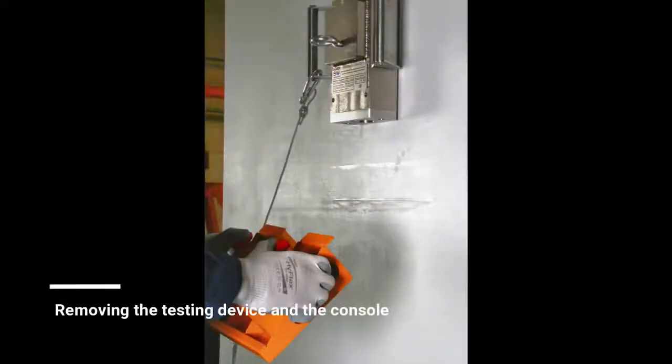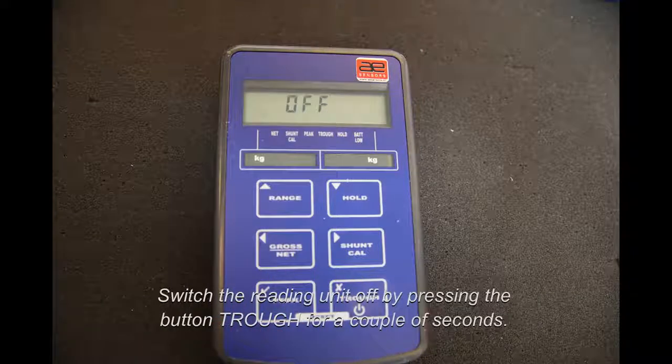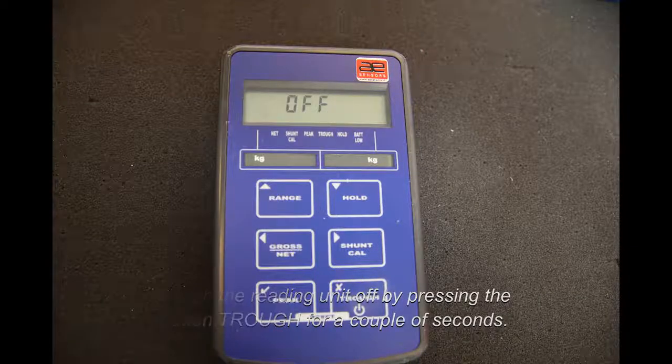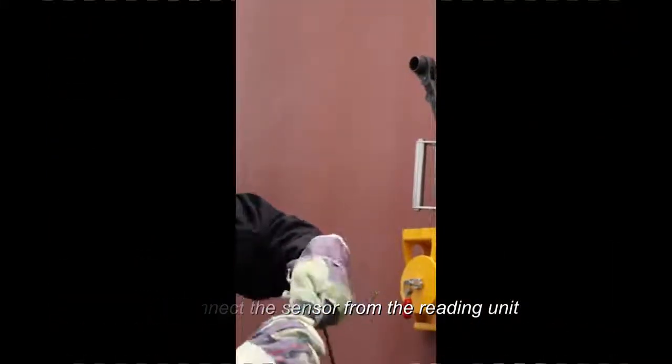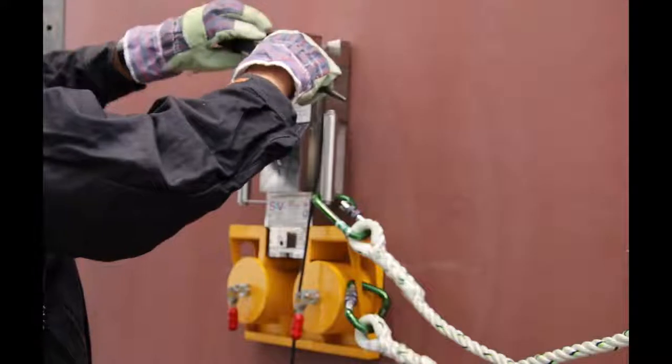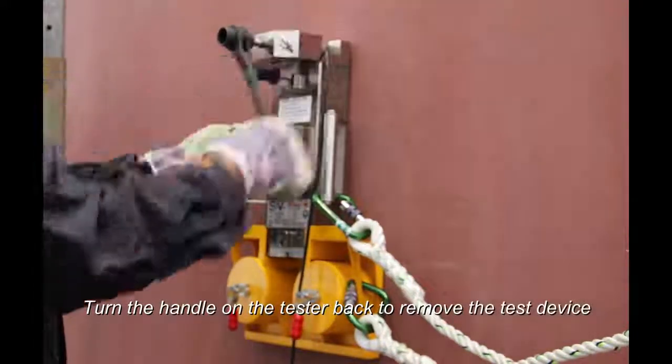Remove the testing device and the console. Switch the reading unit off by pressing the button through for a couple of seconds. Disconnect the sensor from the reading unit. Turn the handle on the tester back to remove the test device.